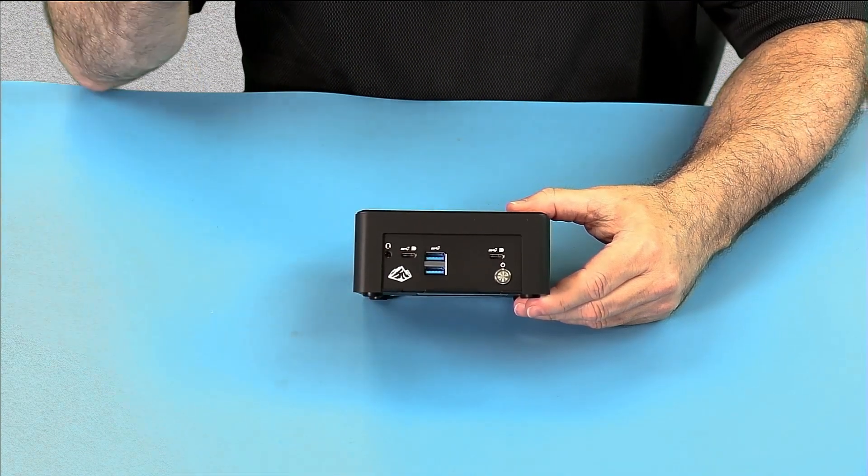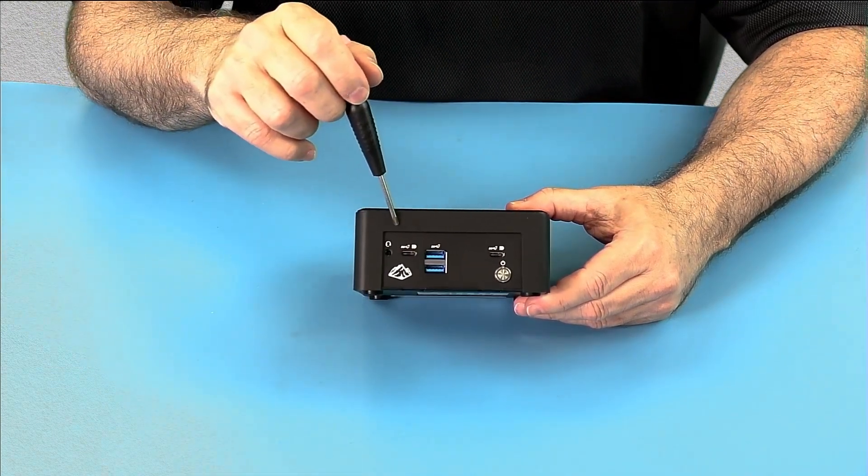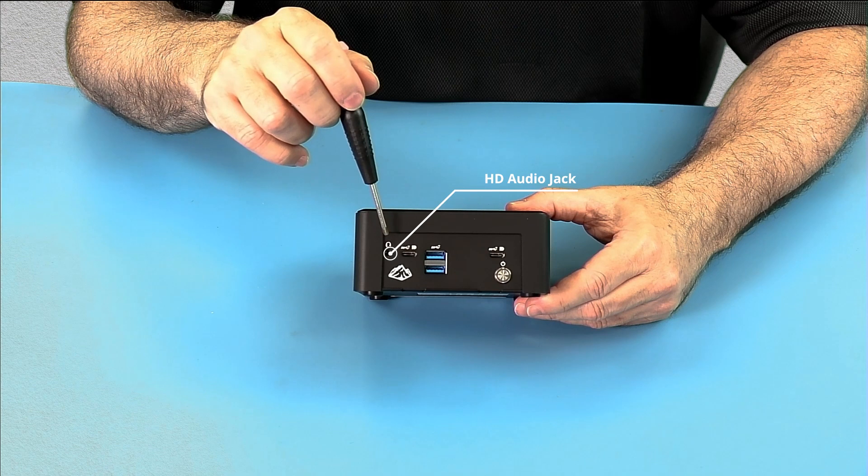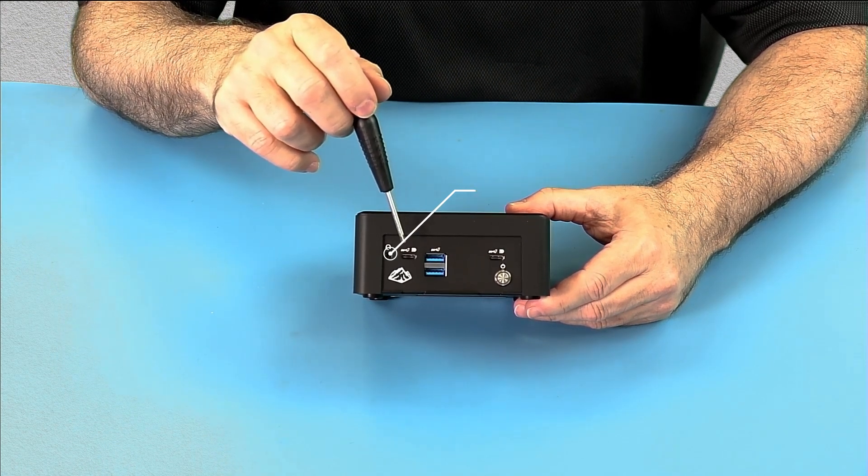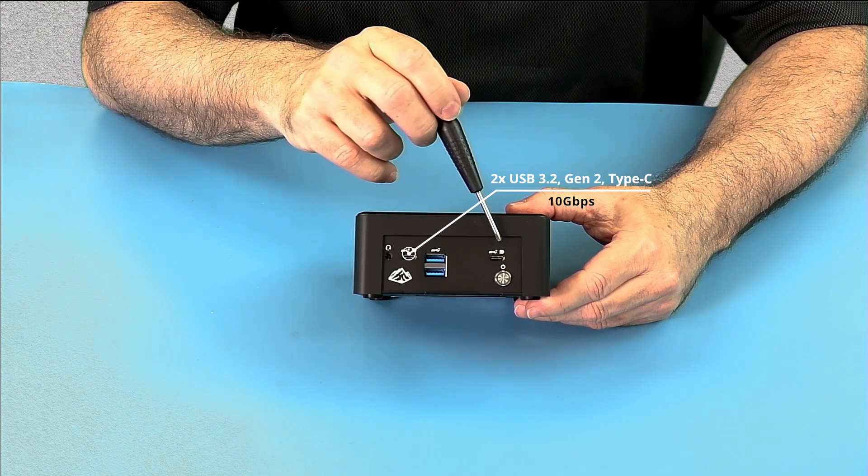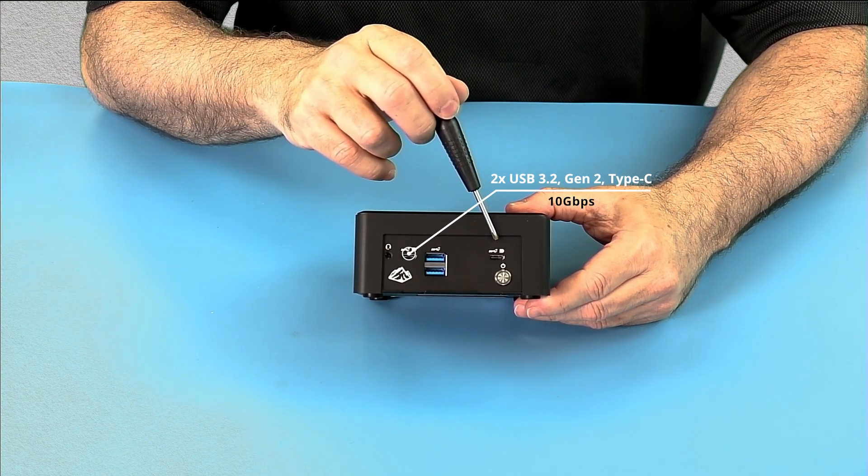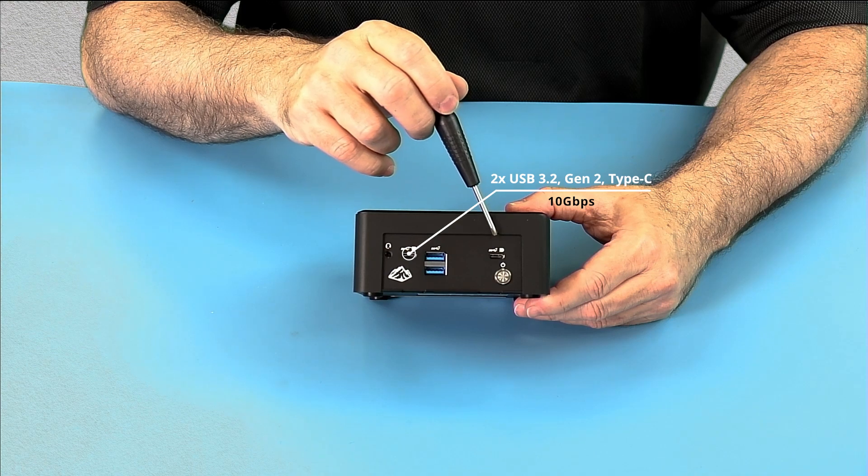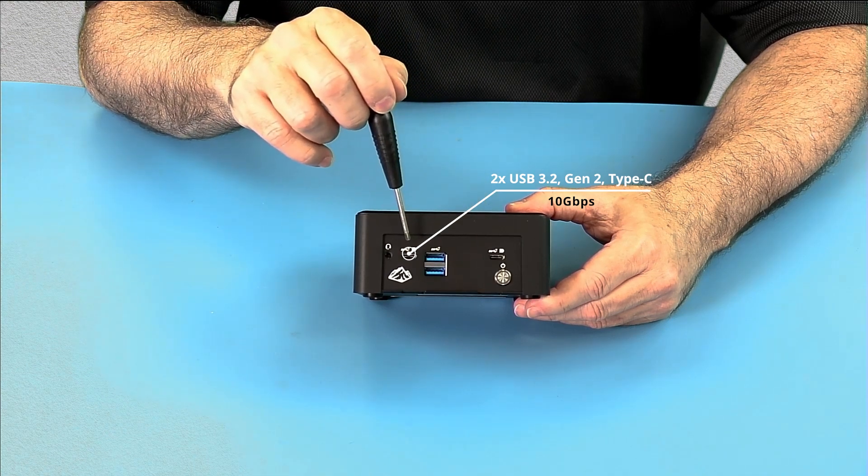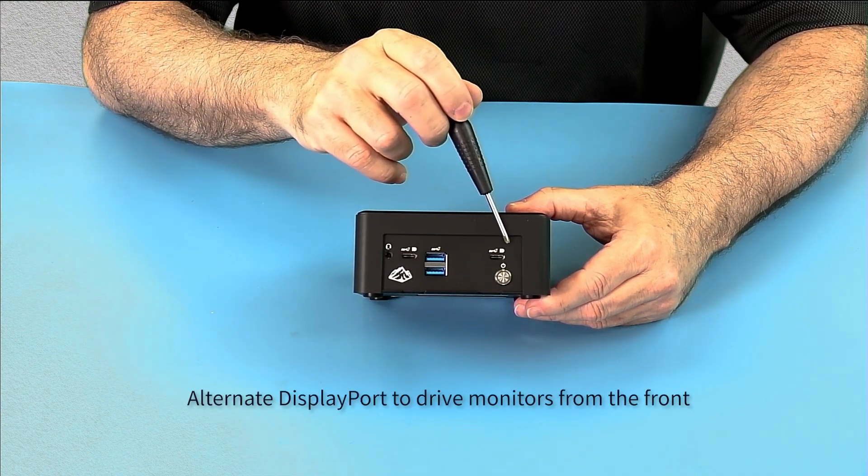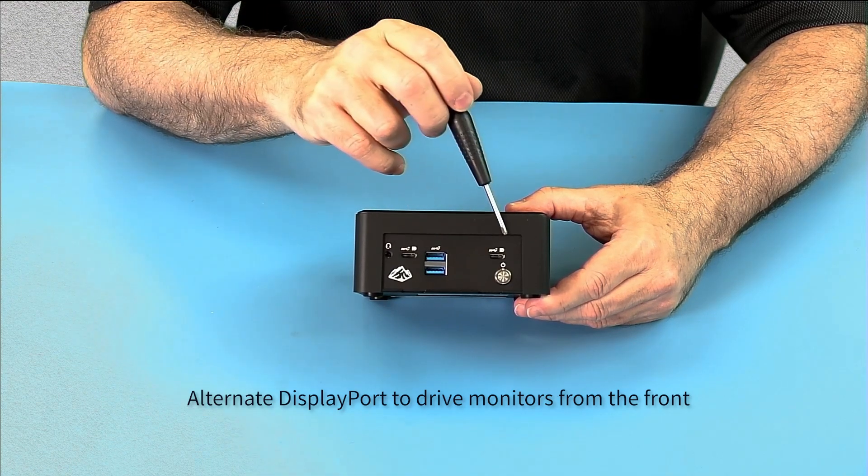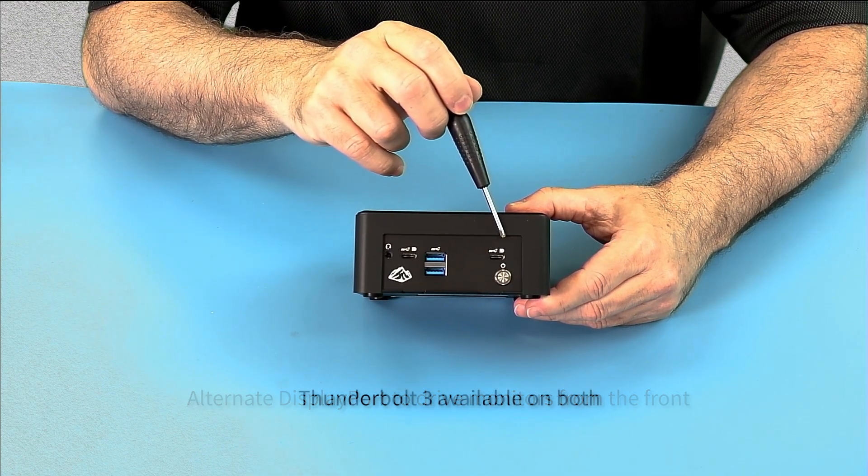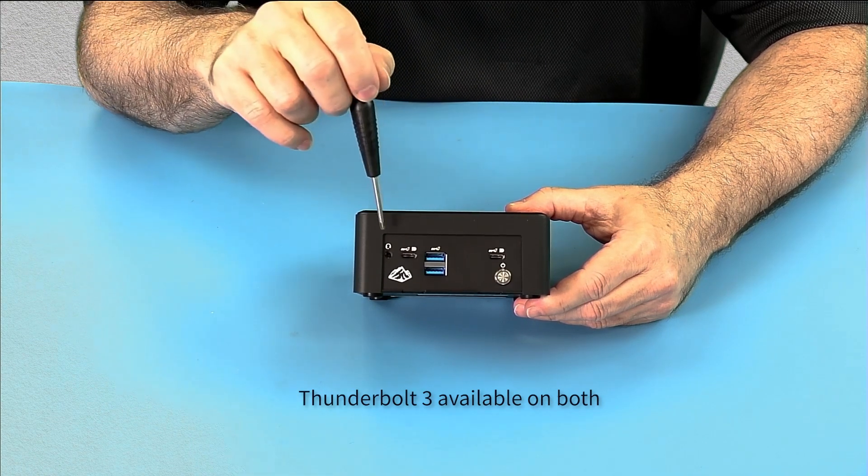Starting with the front, we have the optional HD audio jack. Future versions would not have this audio jack. We have two Type-C USB ports which have USB 3.2 Gen 2, so these are 10 gigabit. Alternate DisplayPort is on both of these, so you can drive monitors from the front, and Thunderbolt 3 is available on both connectors. One of them is a single stream and the other one is dual stream.